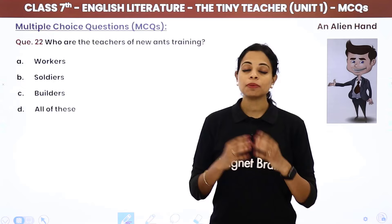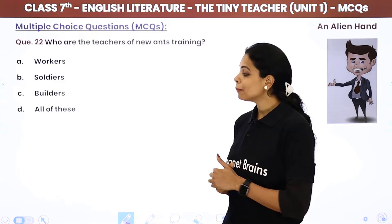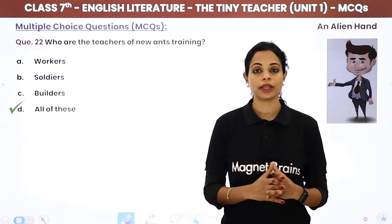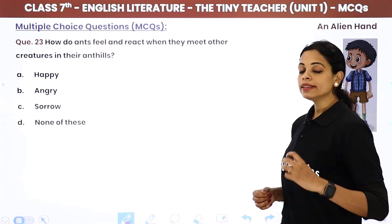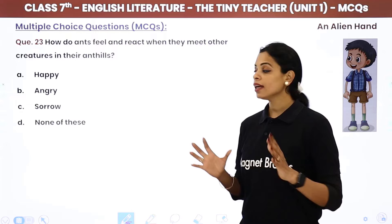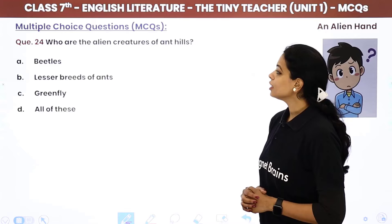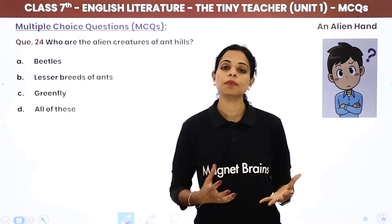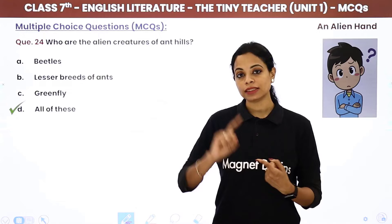More answers: Grubs are cleaned and fed by worker ants. The ant's cow is the green fly, and it gives honeydew to ants. Humans must learn from ants: loyalty to the land, discipline and cleanliness, hard work and sense of duty — all of the above. The snake uses its tongue to smell. An ant hill is home not only for ants but also for beetles, lesser breeds of ants, and green fly.